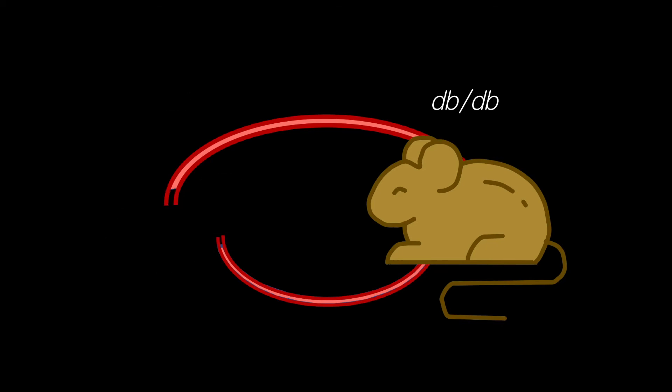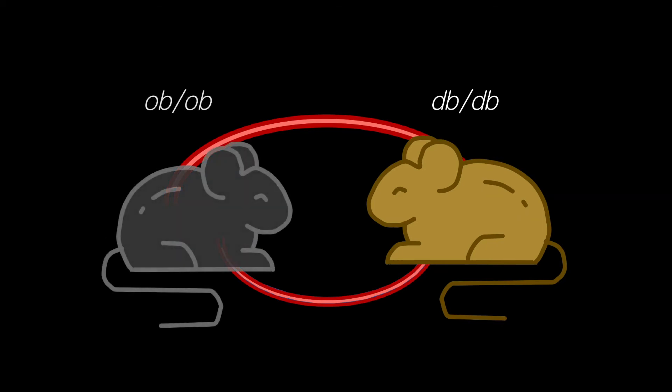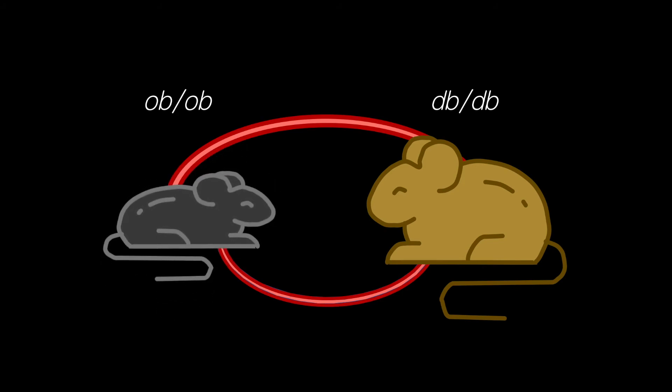And finally, the parabiosis connection of an OB-OB mouse and a DB-DB mouse results in the OB-OB mouse losing weight for the same reason as in the previous scenario. These final two experiments prove that leptin must act on a receptor encoded for by the DB gene.